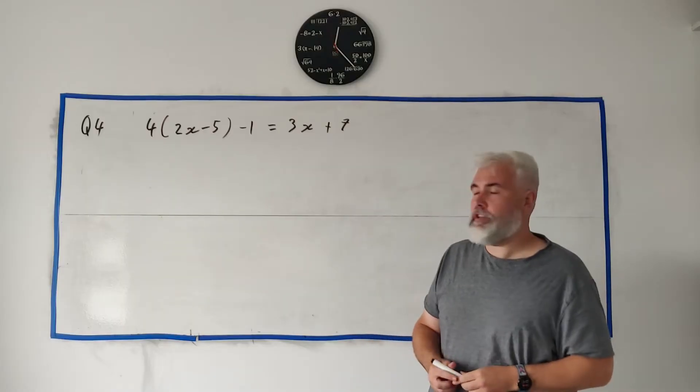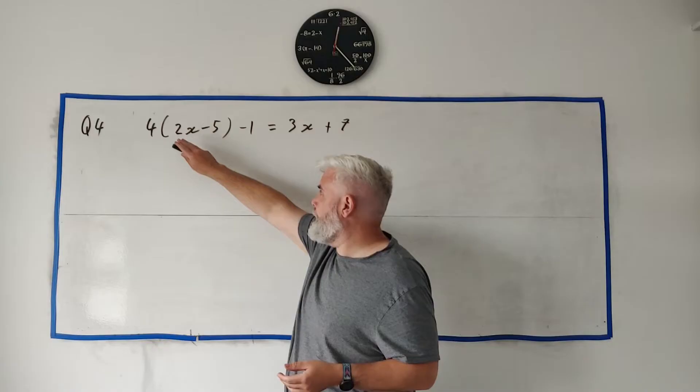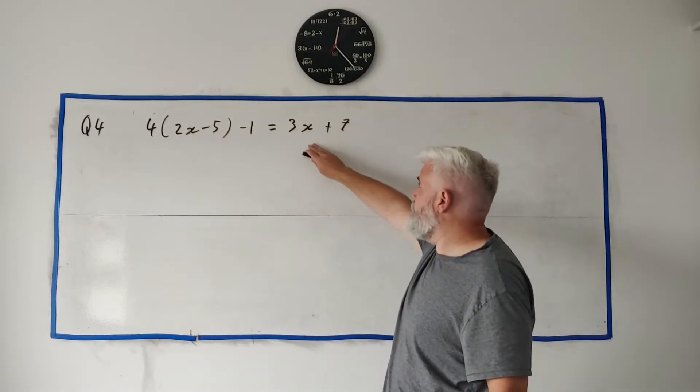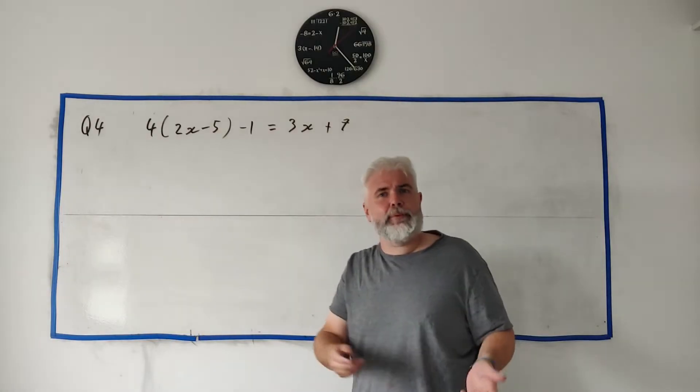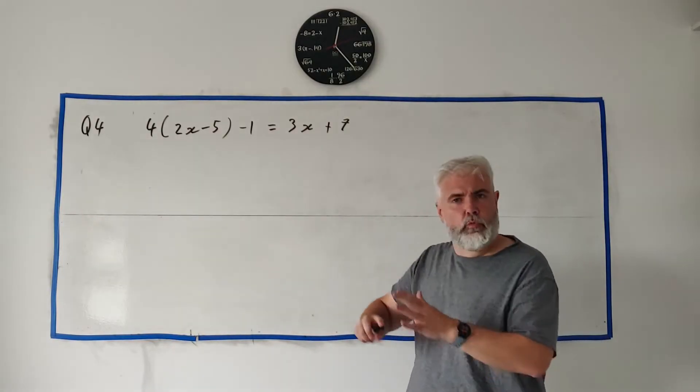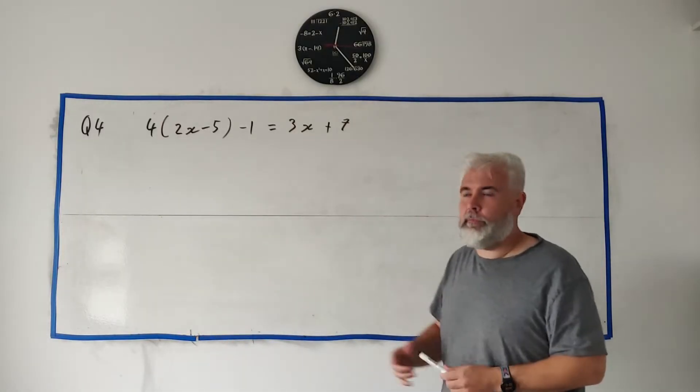Question 4 starts off with a fairly straightforward maths question: 4(2x - 5) - 1 = 3x + 5, and they simply ask you to solve this equation in x. That means rearrange everything until you get x equals a number at the end.